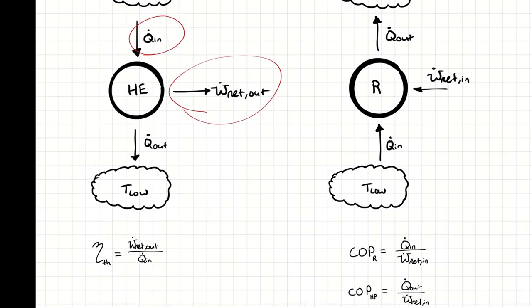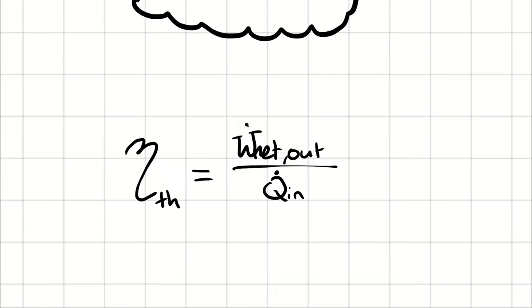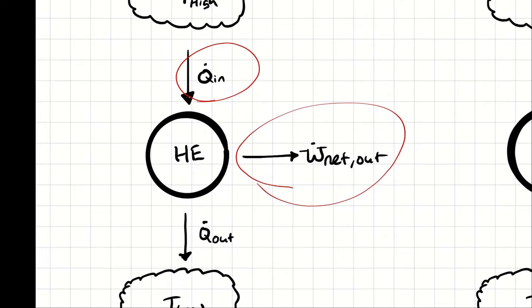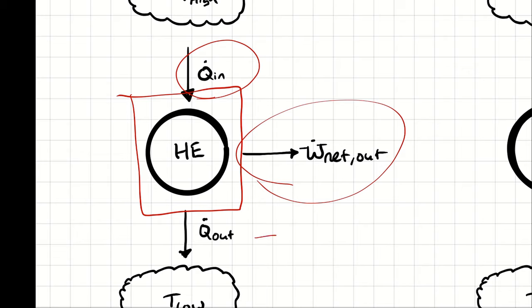We refer to that parameter as the thermal efficiency, abbreviated with eta subscript th. It represents how much of the heat transfer you put in is converted into net work out. If you put in 100 kilowatts of heat transfer and got 60 kilowatts of net work out, that means you have a thermal efficiency of 60%. Furthermore, because the heat engine itself has to obey the first law of thermodynamics, you would have 40 kilowatts left over that leaves as heat transfer out.